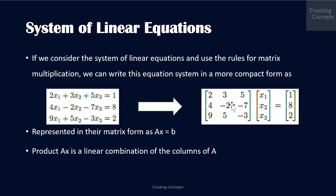The first matrix includes the coefficients of all the x terms. The second vector consists of the x terms x1, x2, and x3, and the last vector consists of the constants in the equation.